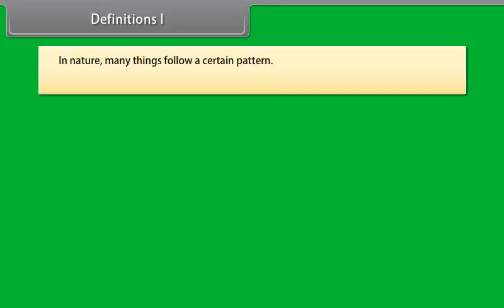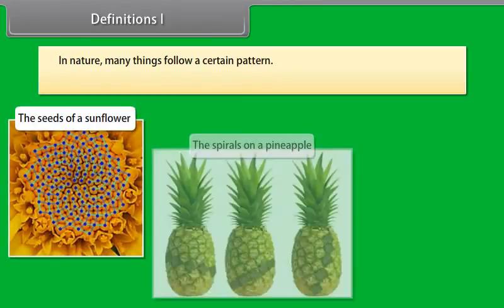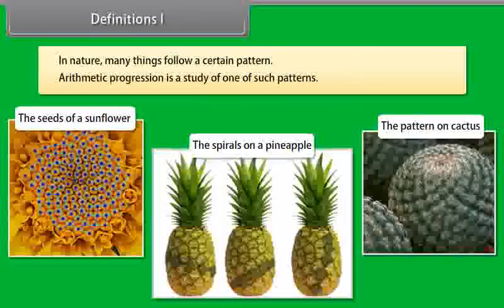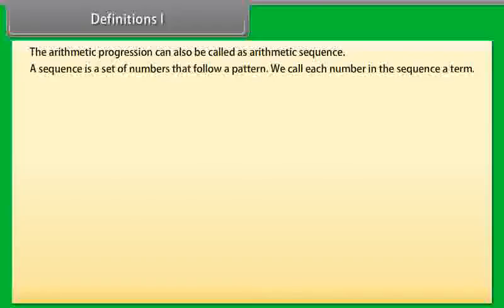In nature, many things follow a certain pattern, such as the seeds of a sunflower, the spirals on a pineapple, the pattern on cactus and so on. Arithmetic progression is a study of one of such patterns. The arithmetic progression can also be called arithmetic sequence. Before talking about arithmetic sequence, let us know what a sequence is. A sequence is a set of numbers that follow a pattern. We call each number in the sequence a term.